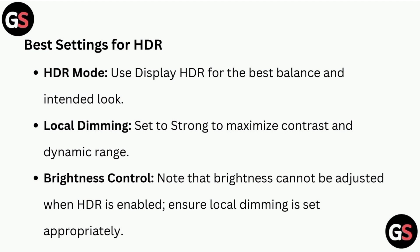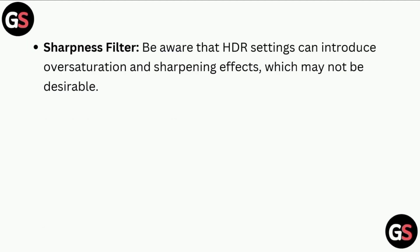For best HDR settings: use Display HDR mode for the best balance and intended look. Set Local Dimming to Strong to maximize contrast and dynamic range. Note that Brightness cannot be adjusted when HDR is enabled, so ensure local dimming is set appropriately. Also be aware that HDR settings can introduce oversaturation and sharpening effects, which may not be desirable.